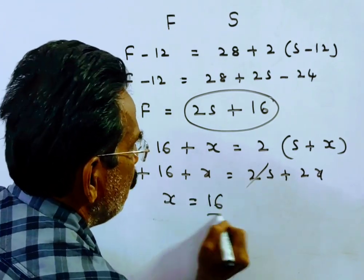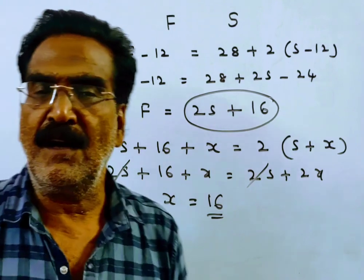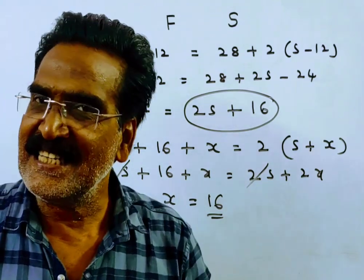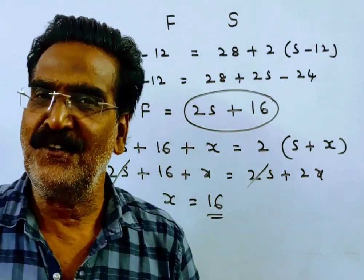X is equal to 16. So, after 16 years, father will be twice the age of his son. Friends, thank you. Have a nice day.